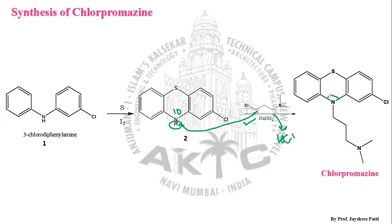Instead of the HCl, a dimethylpropyl chloride side chain is introduced on the nitrogen of structure 2. The addition of the side chain on nitrogen can only be done in the presence of a base. This is a simple two-step synthesis of chlorpromazine.